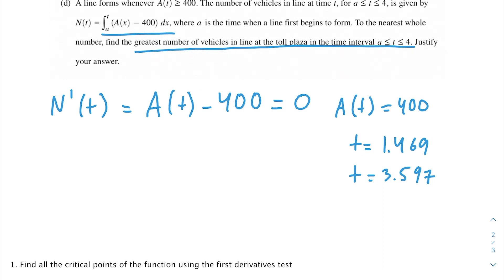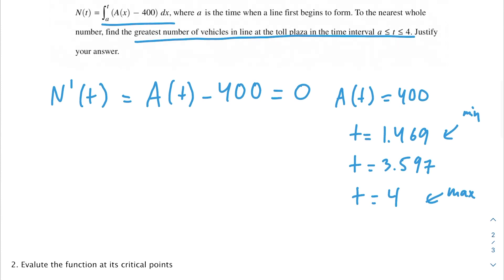We also want to evaluate the function at the end of its domain. So that would be when t is equal to 4 because that might be a maximum. Our minimum is actually going to be this first t that we evaluated because that's the first point at which there are greater than or equal to 400 vehicles in line. So this is our min, this is our max. We plug those into our equation N(t), which equals the integral from a to t of A(x) minus 400 dx. Since this is the min, we can also call this a.